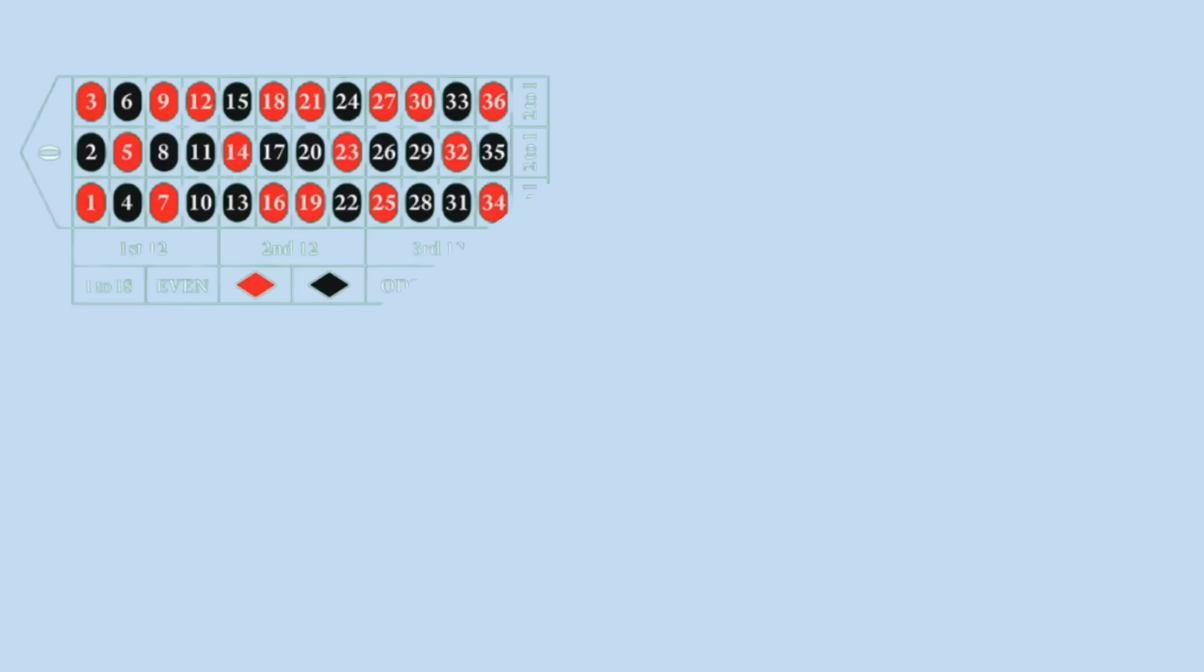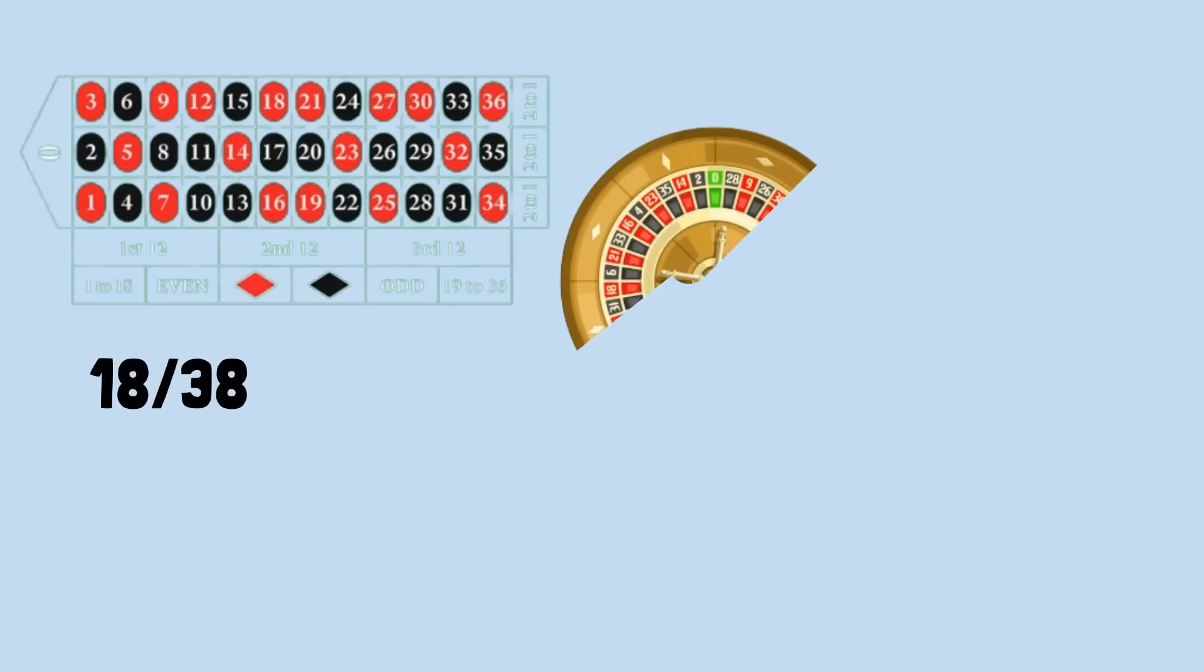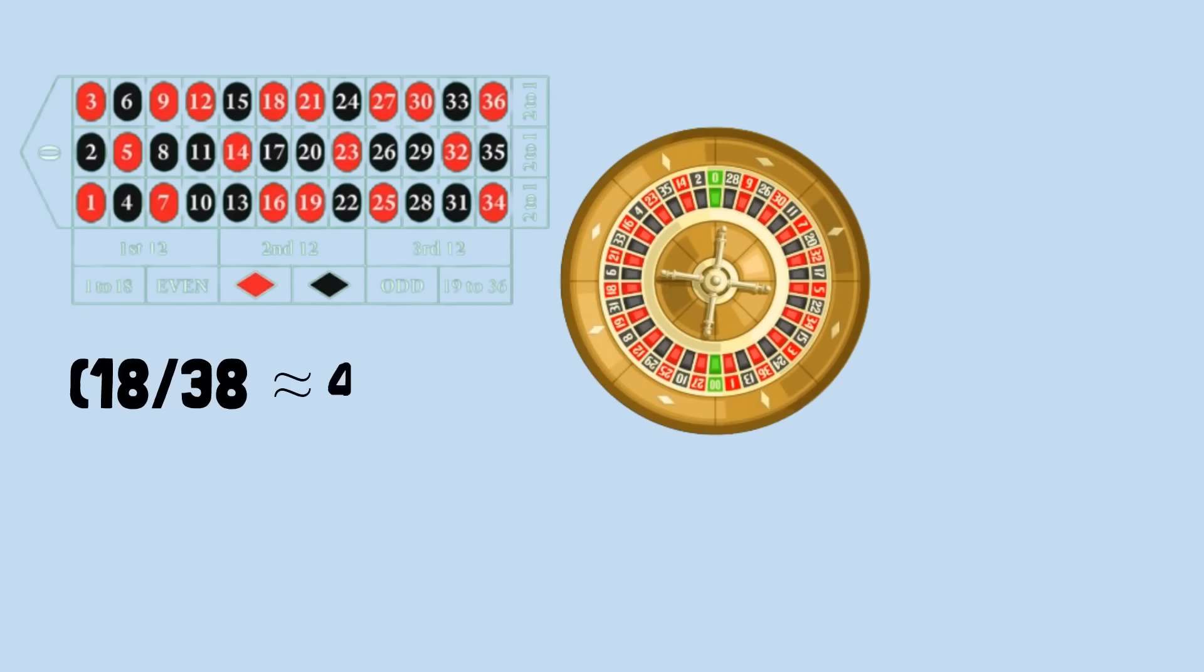Since Red pays 1-to-1 odds, and there are 18 Red spaces out of 38 total spots on a double-zero roulette wheel, Bob has roughly a 47.4% chance of achieving his goal. It's essentially a coin flip, slightly weighted against him.